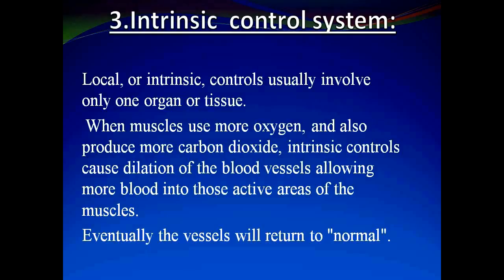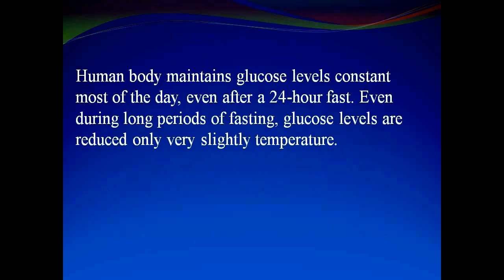Maintaining glucose level is another example of this control system. The human body maintains glucose levels constant most of the day, even after a 24-hour fast and during long periods of fasting. The glucose levels are reduced only very slightly.